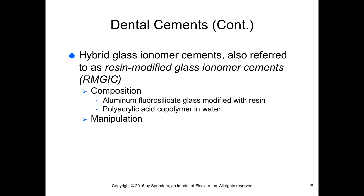Hybrid ionomer cements are similar to glass ionomer but have been modified with the addition of resin. The resin helps improve bond strength and decrease solubility, while fluoride release remains the same as that of a glass ionomer. Expansion of the material as it absorbs moisture after setting is a concern, and hybrid ionomers are not recommended for ceramic restoration cementation.